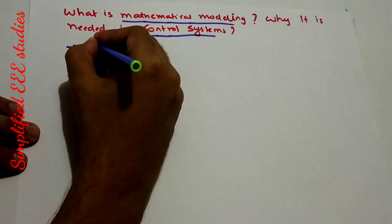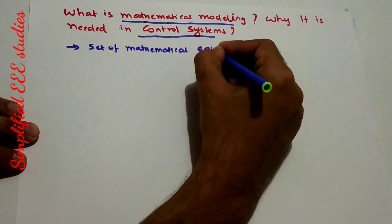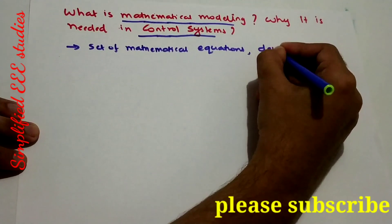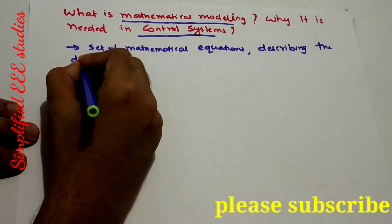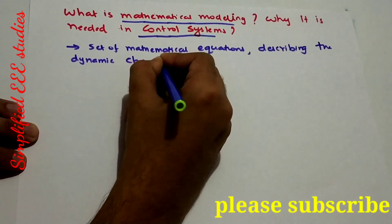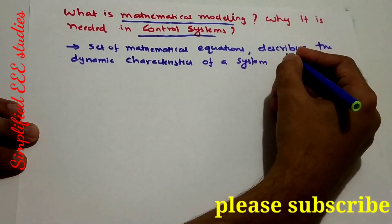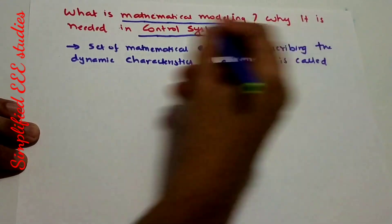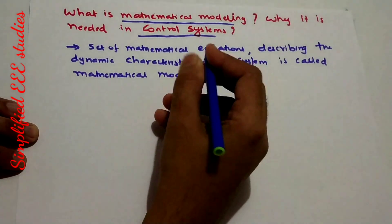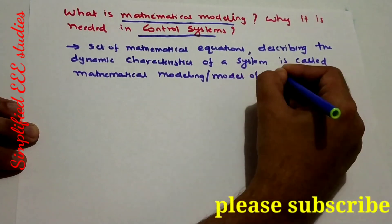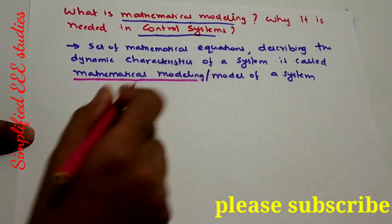Definition: A set of mathematical equations describing the dynamic characteristics of a system is called mathematical modeling, or the model of a system. You can underline 'mathematical model' or 'mathematical modeling.'